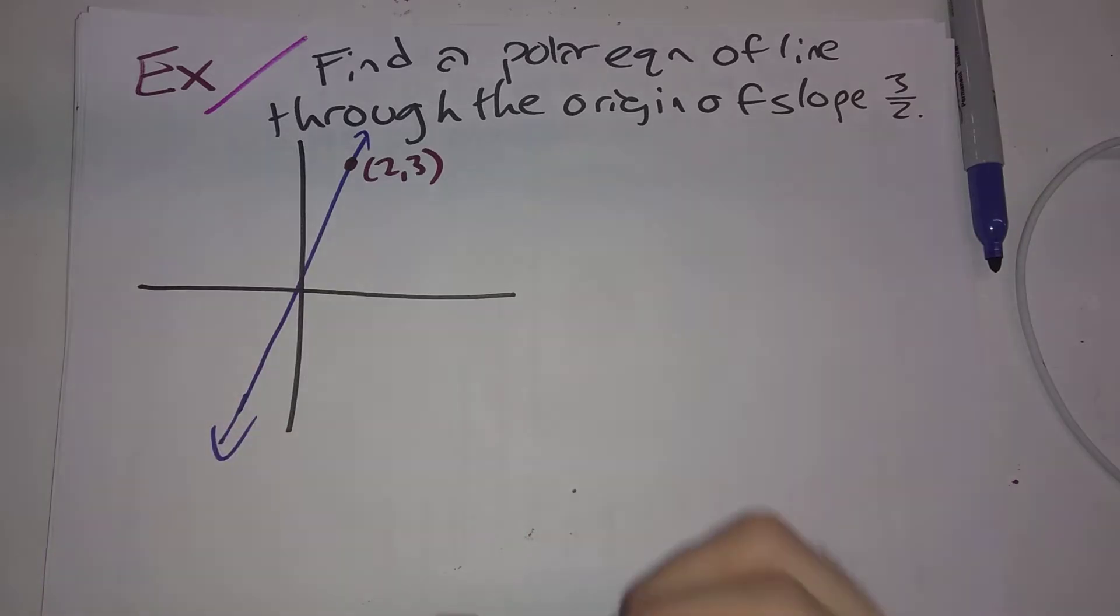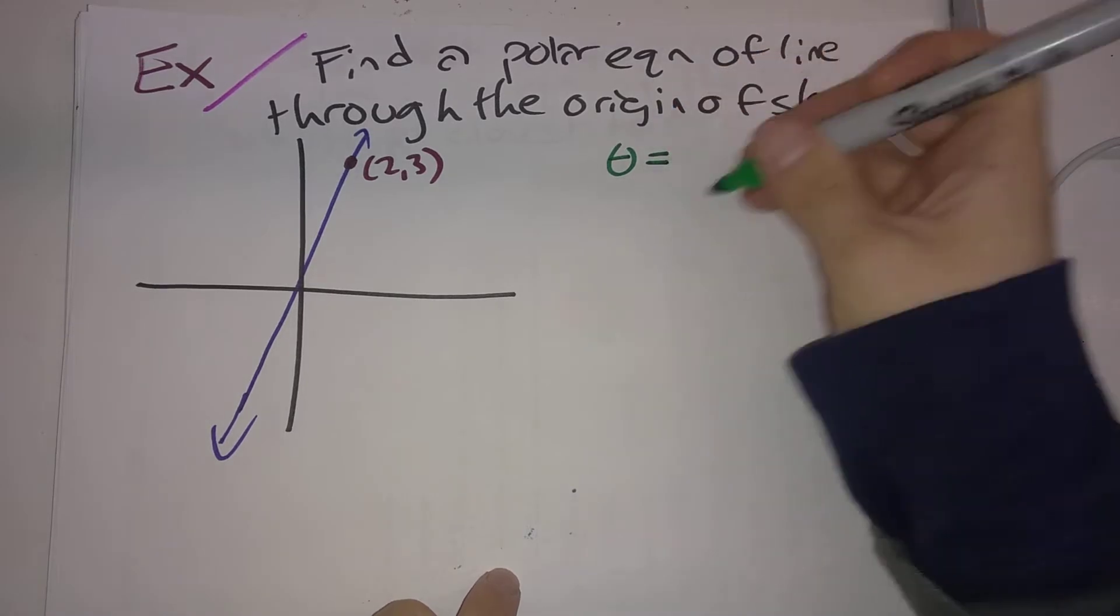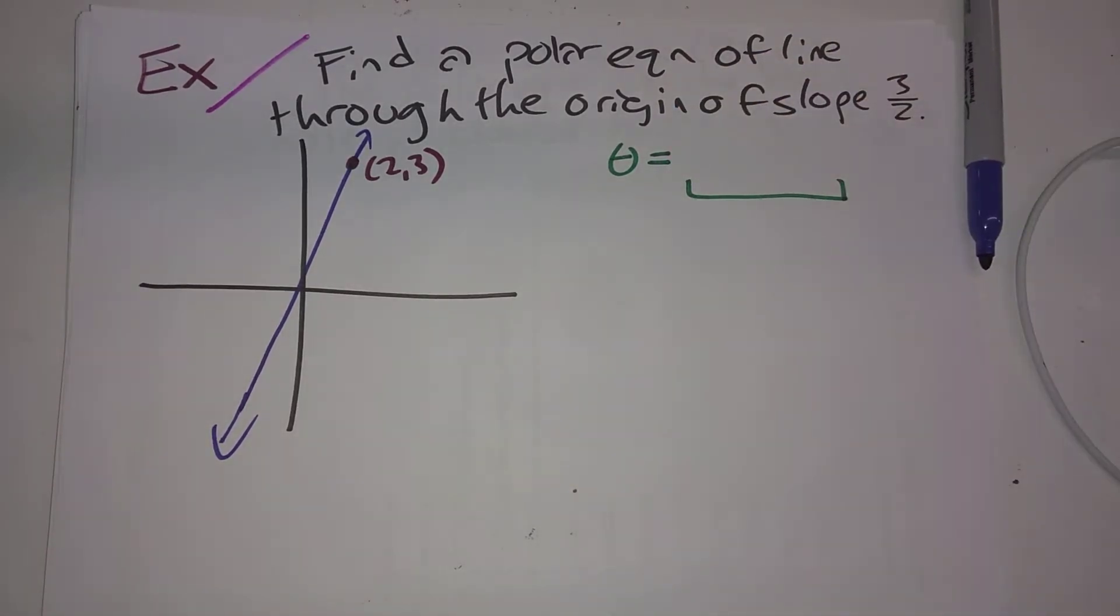up 3 and over 2. Now, something that we discussed earlier is that lines through the origin have polar equation of the form theta is equal to something, some constant. There's no R dependence here. So now we just have to figure out, well, what is this theta?